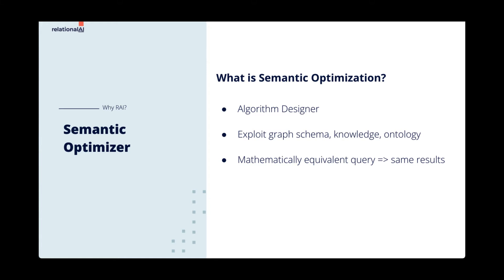In RAI's relational knowledge graph system, the semantic optimizer takes input REL queries and rewrites them to get the same results, but with less intermediate data or fewer calculations. These rewrites exploit the graph's schema, knowledge, and ontology to generate an optimal REL program. The rewrites are mathematically provably equivalent to the original queries and thus will return the same results.